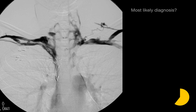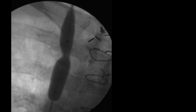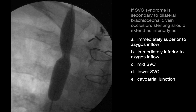The most likely diagnosis in this case is SVC syndrome. The most common cause of SVC syndrome is intrathoracic malignancy. If SVC syndrome was secondary to bilateral brachiocephalic vein occlusion, stenting should extend only as inferiorly as just above the azygous inflow, since the azygous may be part of an active collateral venous drainage pathway that you'd like to avoid jailing with your stent.